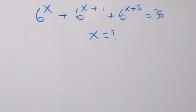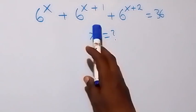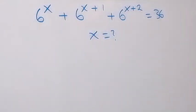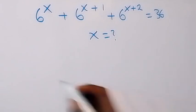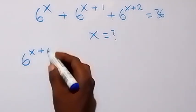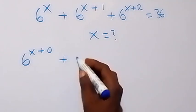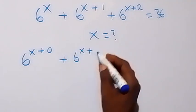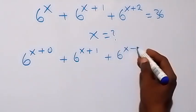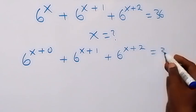Hello y'all, welcome. How to solve for x in this nice exponent problem. We have 6 raised to power x, plus 6 raised to power x plus 1, plus 6 raised to power x plus 2, equals 36. From here, we can equally write this as 6 raised to power x plus 0, plus 6 raised to power x plus 1, plus 6 raised to power x plus 2, equals 36.